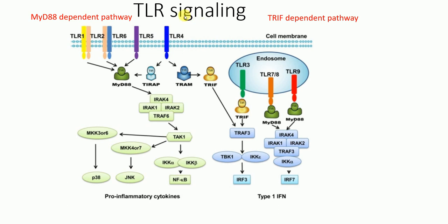Now I will discuss how TLR signaling occurs. When TLR receptors are encountered by their respective ligands, the respective TLRs recruit their corresponding adapter molecule, which can be MyD88, TIRAP, TRAM, TRIF, etc. Basically, all TLR receptors signal through the MyD88-dependent pathway, except TLR3. TLR4 can signal through both the MyD88-dependent pathway and the TRIF-dependent pathway.